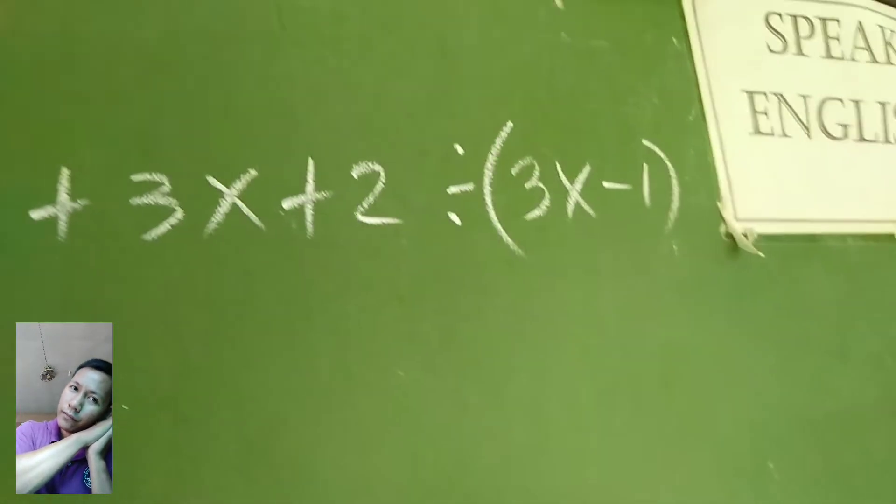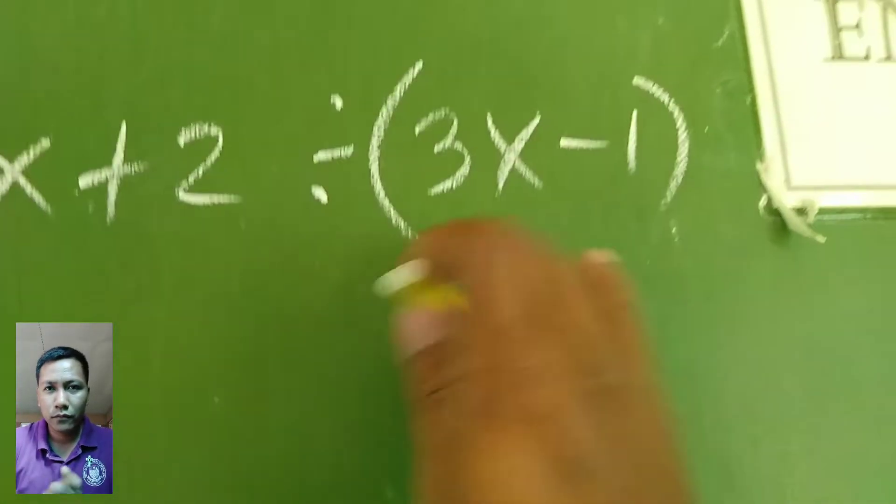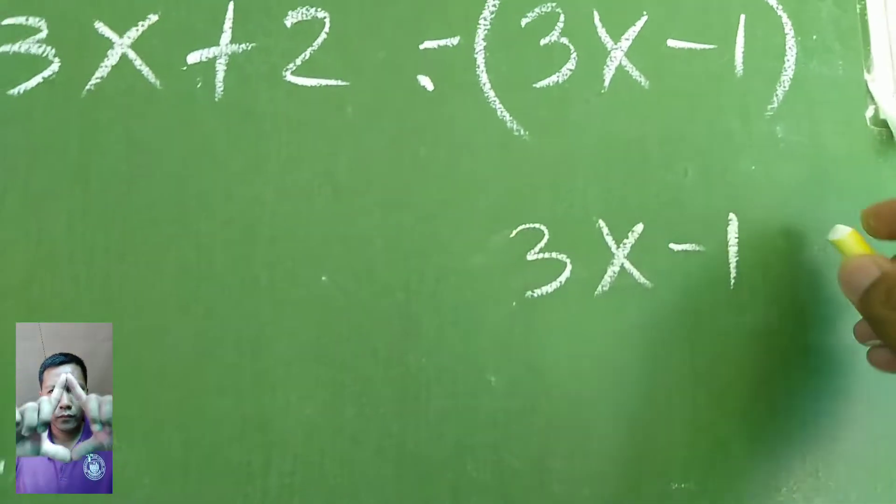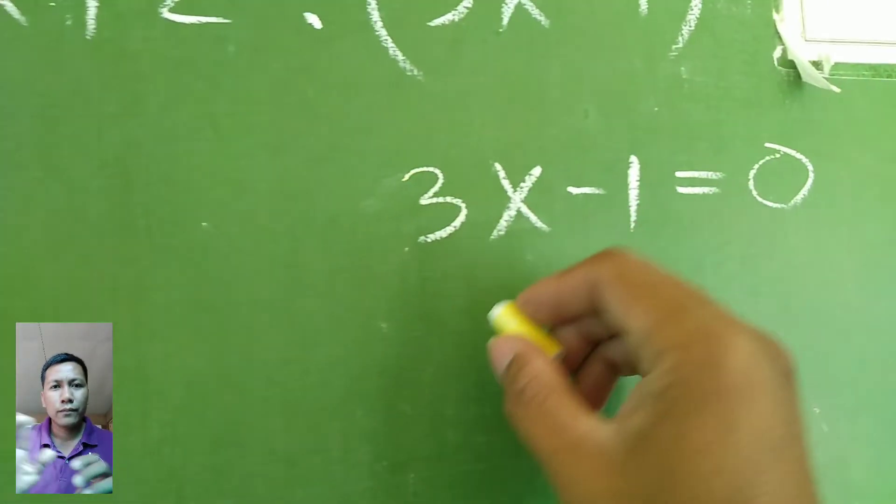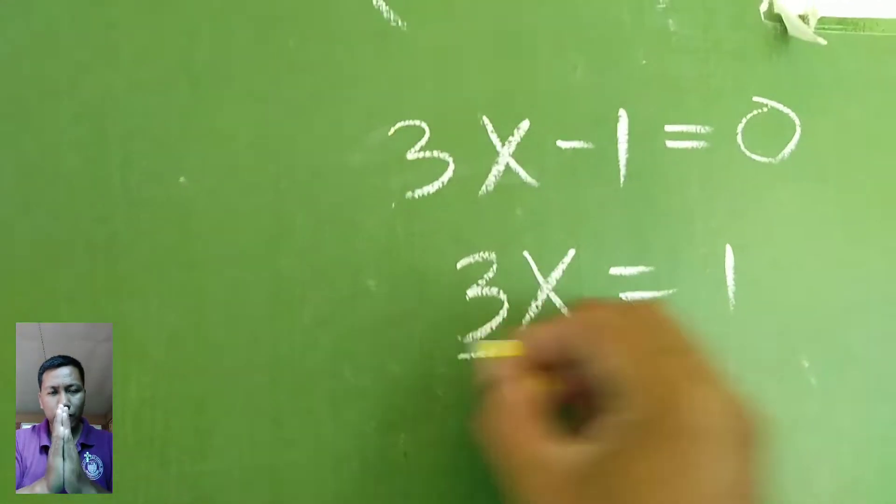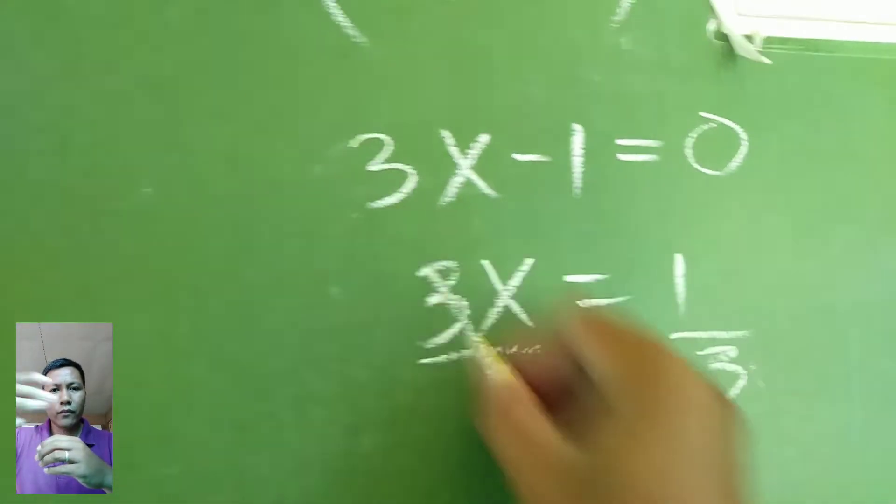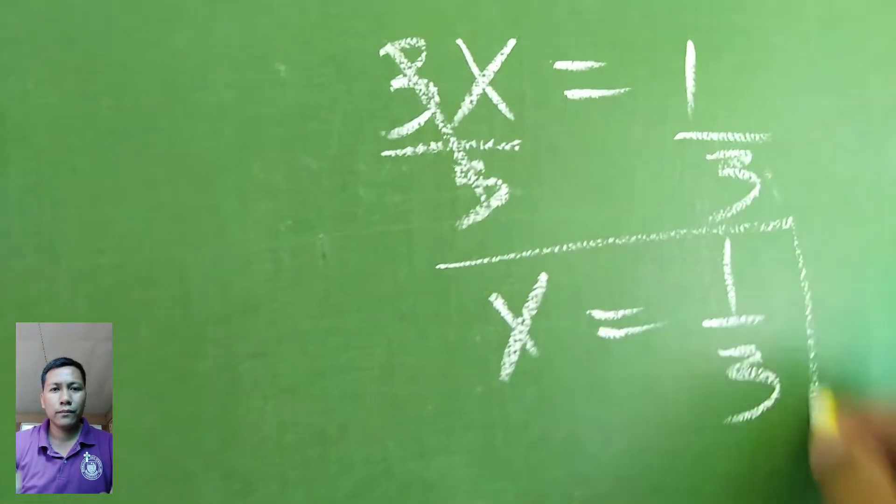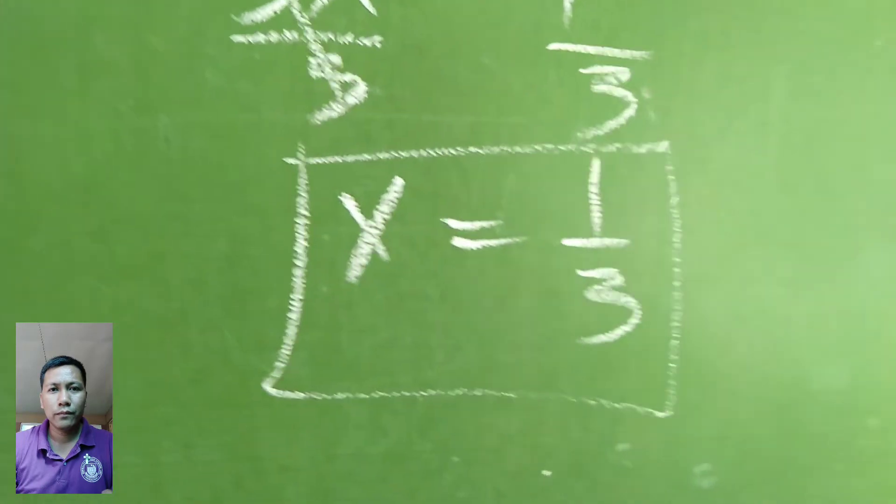So simplify and recreate this 3x minus 1. We have 3x minus 1 equals 0. Transpose, so we have 3x equals positive 1, and divide both sides by 3. So we have x equals 1 third. This is what we'll use, 1 third.